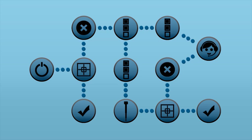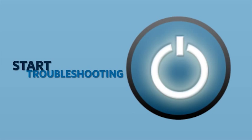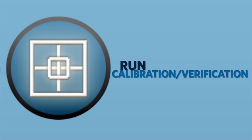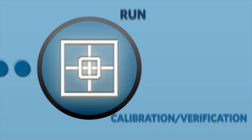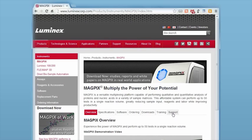We will use this flowchart to guide our troubleshooting. The first step when getting errors on the MagPix instrument is to run a calibration and verification cycle. If you are not sure how to run the calibration and verification routine, refer to the corresponding video on the support tab of the MagPix instrument page at www.luminexcorp.com.